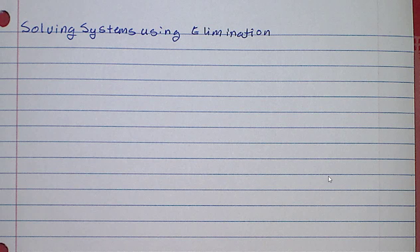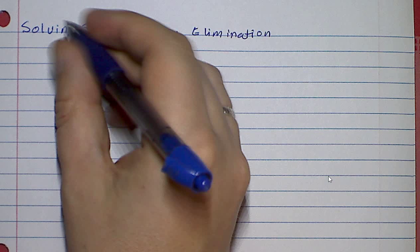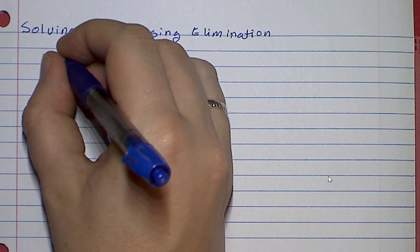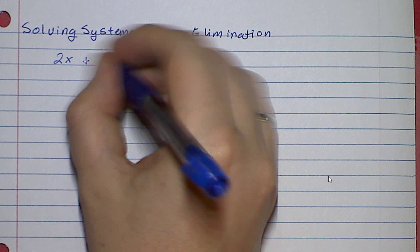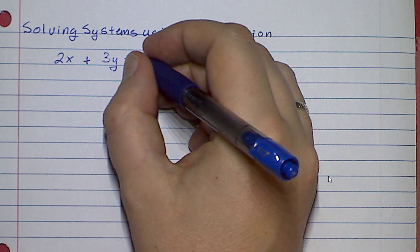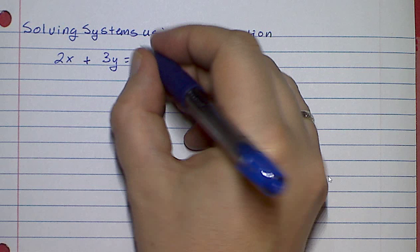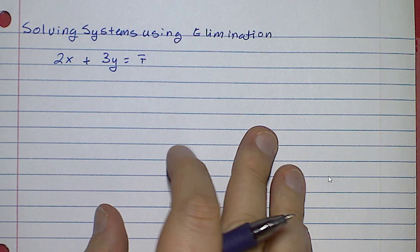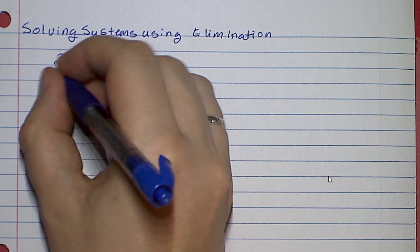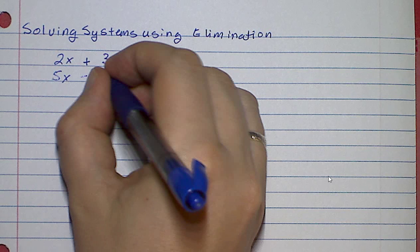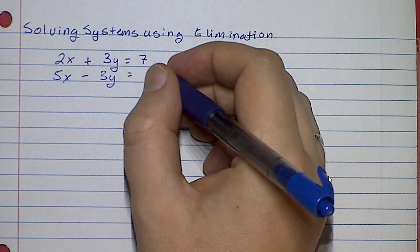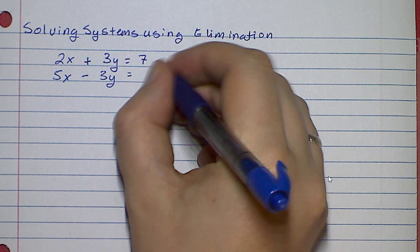An example of a system of equations that you can solve using elimination would be: let's say we've got 2x plus 3y is equal to 7, and then the other equation is going to be 5x minus 3y is equal to negative 14.